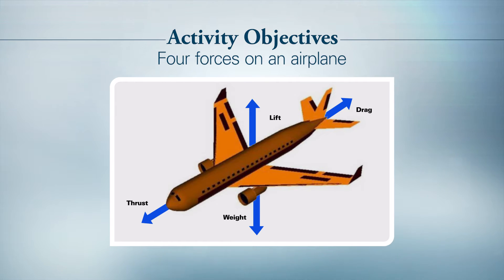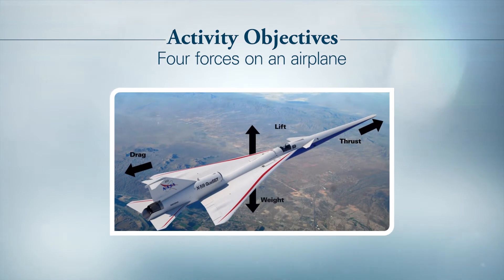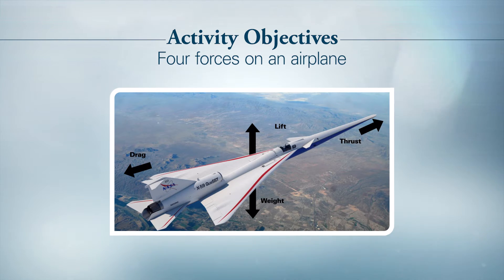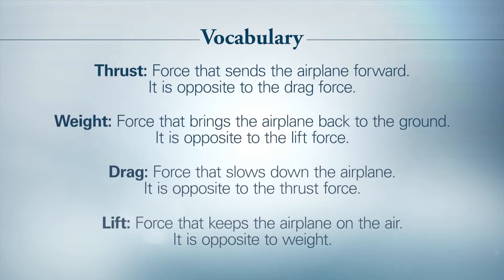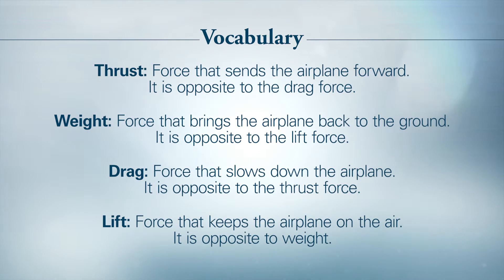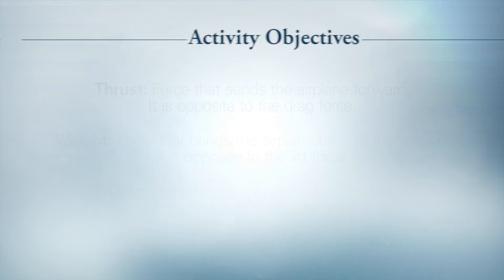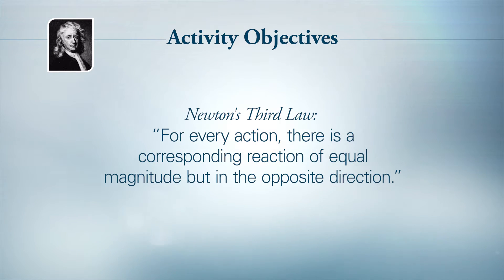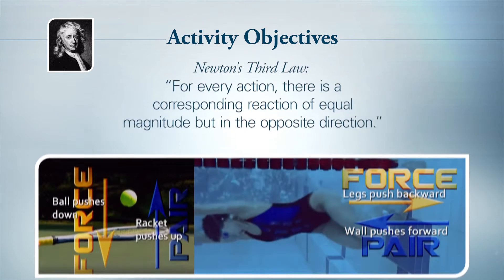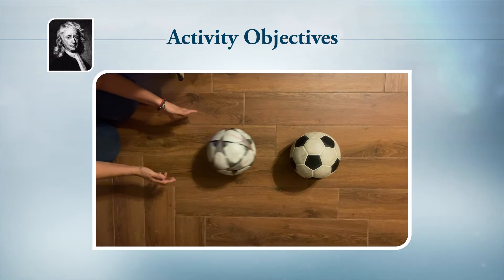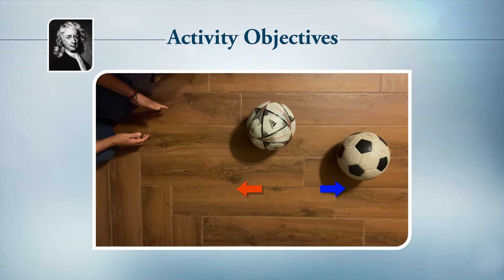Each of these forces has an opposing force or pair force — weight is opposite to lift, lift is opposite to weight, drag is opposite to thrust, and thrust is opposite to drag. When the four forces are balanced, the airplane is leveled. Another main objective is to demonstrate Newton's third law of motion, which states that for each action there is a corresponding reaction of equal magnitude but in the opposite direction. If object A exerts a force on object B, then object B must exert a force of equal magnitude in the opposite direction on object A — an action-reaction force pair.